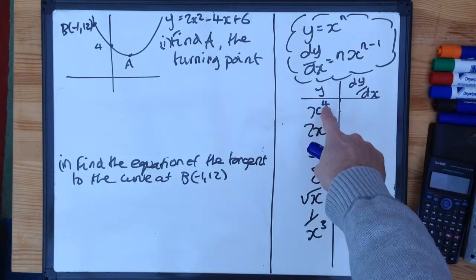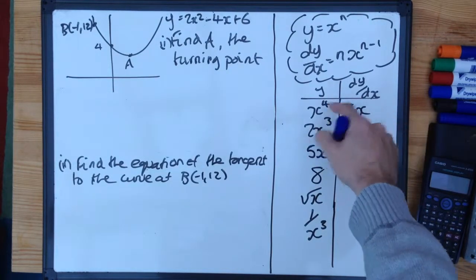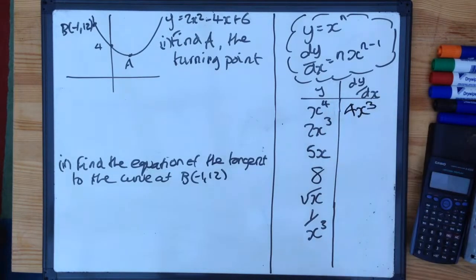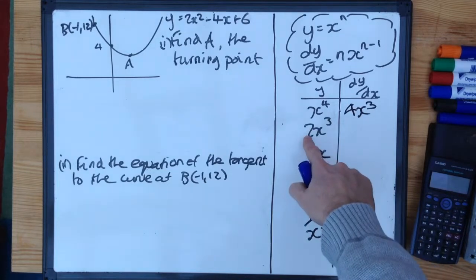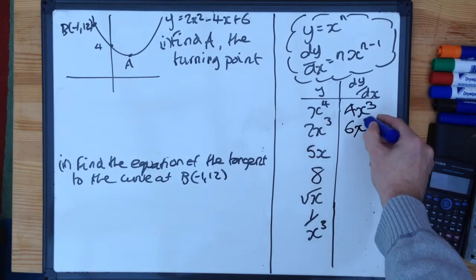So for this one here, the power is 4, so we multiply by the power, so that's 4x, 1 off the power, 3. Same idea for the next one. Multiply by the power, so 3 times 2 is 6, x, take 1 off the power, 2.